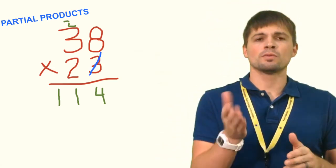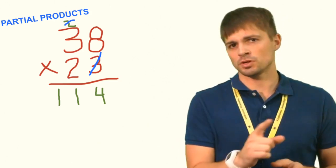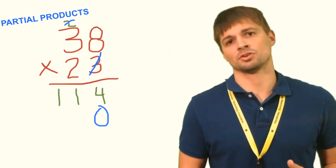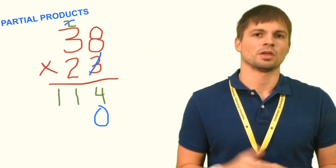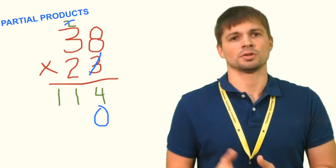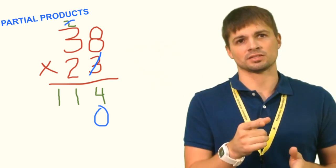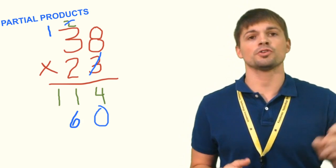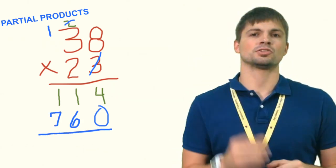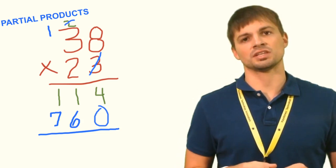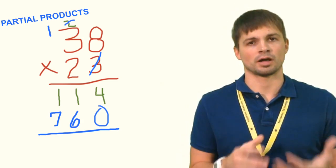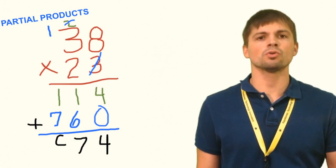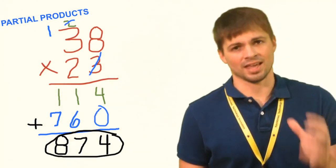We cross off the 3 on the bottom because we're done with it. Then we drop a zero as a placeholder, because we are now multiplying by 20, not 2 — when multiplying by a number ending in zero, we add a zero to the end. Then 2 times 8 is 16 — put down the 6 and carry the 1. Next, 2 times 3 is 6, plus the carried 1 gives us 7. Our second partial product is 760. Adding 114 and 760: 4 plus 0 is 4, 1 plus 6 is 7, 1 plus 7 is 8 — the total product is 874.